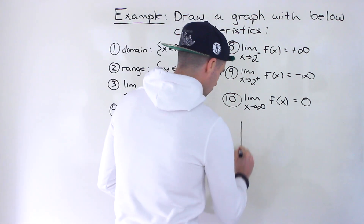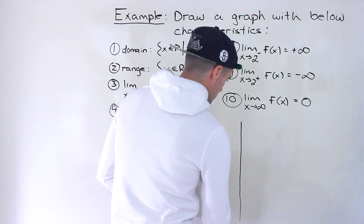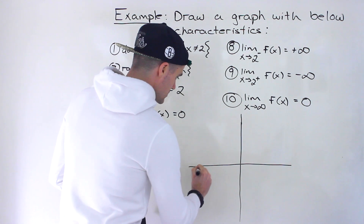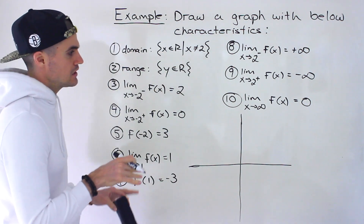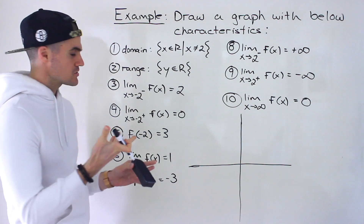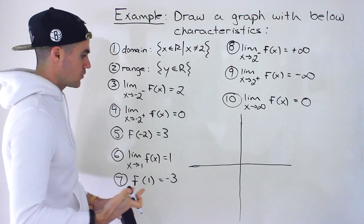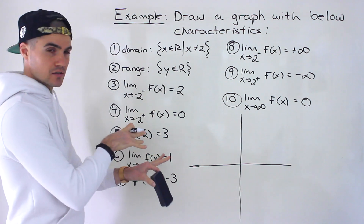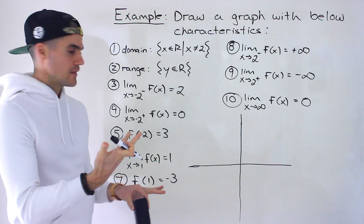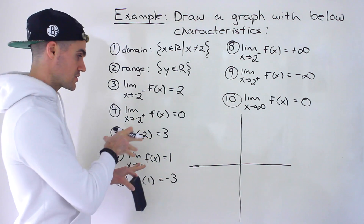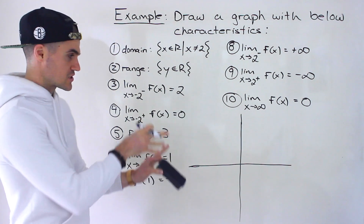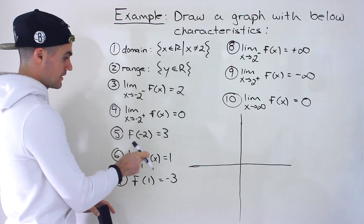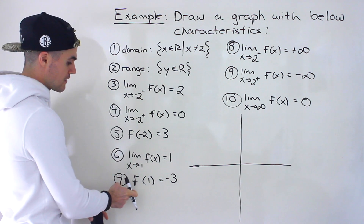Let's draw a graph and try to draw something that's going to fit all of these. As I mentioned in previous similar examples, what I like to personally start with is any points that are given, because sometimes limits have a little bit of flexibility. But with certain points — if coordinates are given — there's no flexibility with that. Those are set things on the graph. We're given two points out of all 10 characteristics: number 5 and number 7.